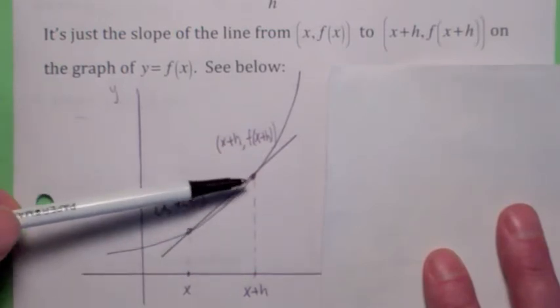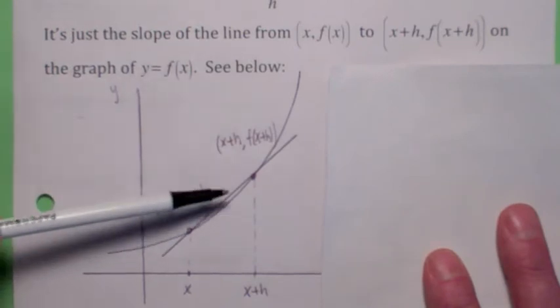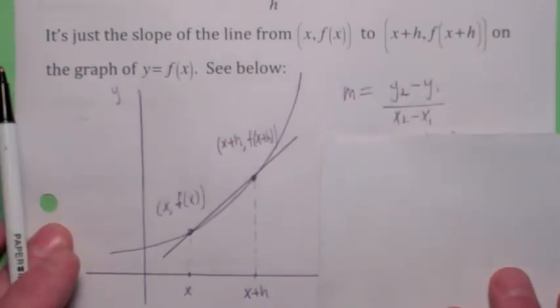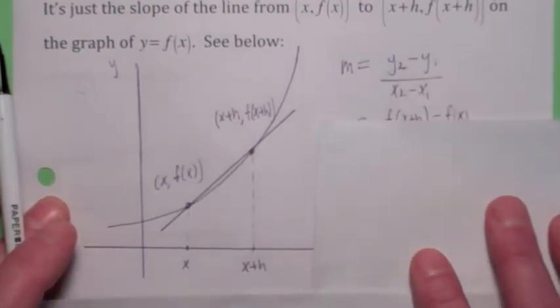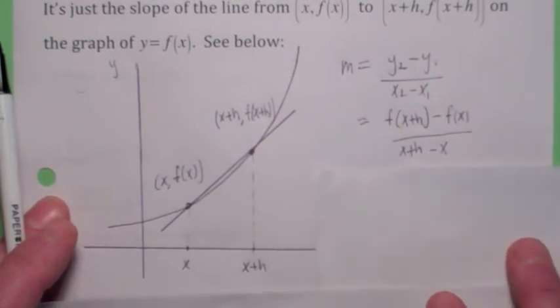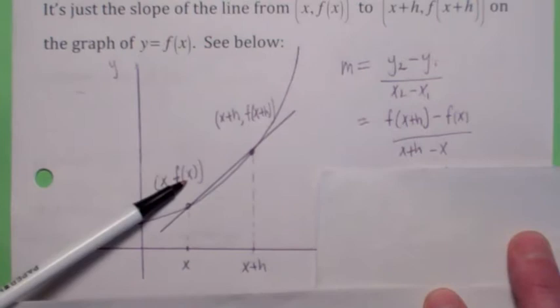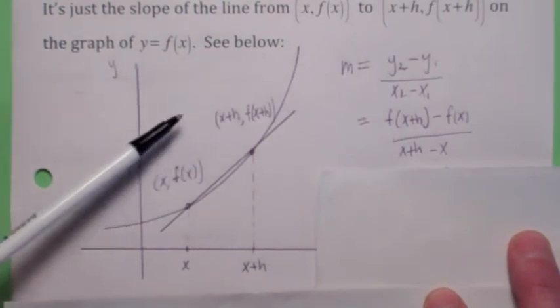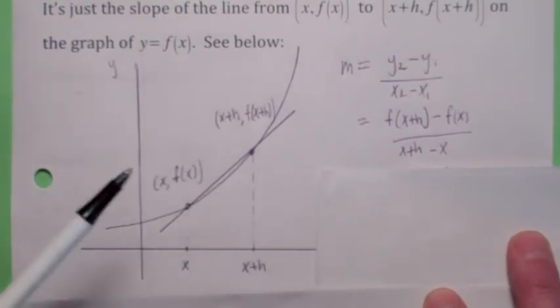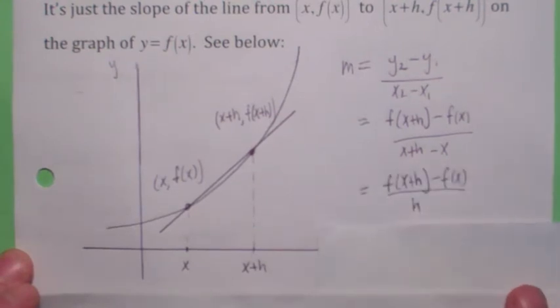How would you talk about the slope of this line that goes through this point and this point? It would be the change in y over the change in x, right? Well, in this case, the change in y would be f(x+h) - f(x). The change in x would be x plus h minus x. So you get this. The x's cancel on the bottom and, lo and behold, you get the difference quotient.